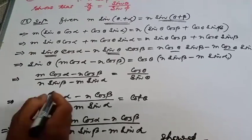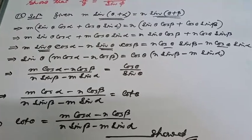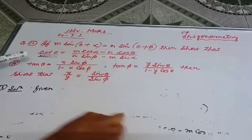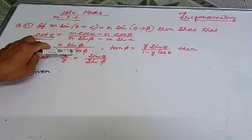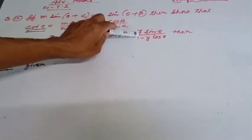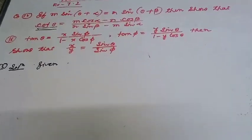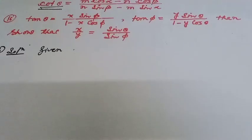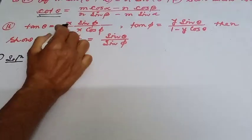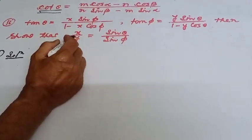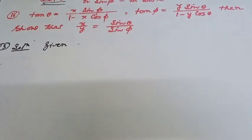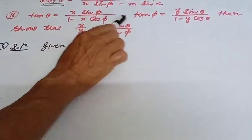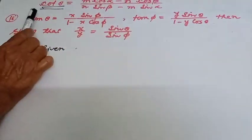Now for the next part: this part is equal to x·sin φ divided by 1 minus x·cos φ. We need to show that x divided by y is equal to sin θ divided by sin φ. We need to find x and y values and put them on the left-hand side.